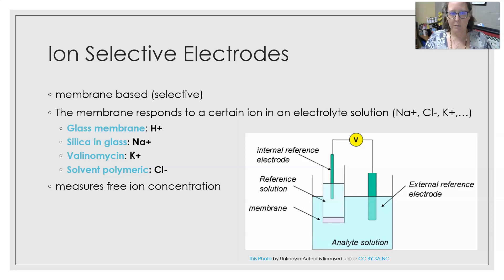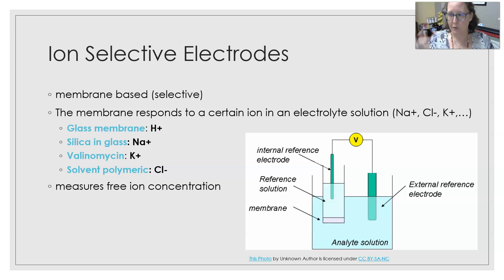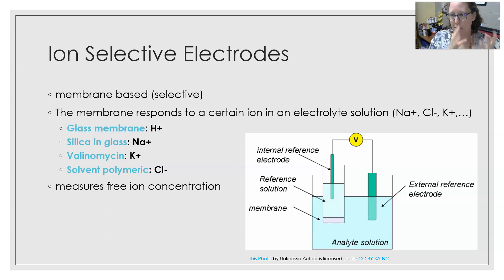So if you want to measure sodium, potassium, and chloride in a sample, you would have three electrodes — three ISEs. The first one would be specific for sodium and would measure sodium. Then the sample would go to the next one, which would measure potassium. And then to the next one, which would measure chloride. You would get all your results and they would be sent over to the computer.